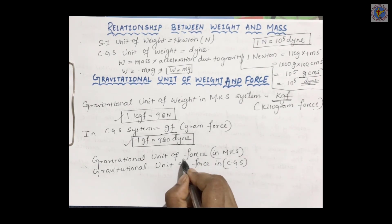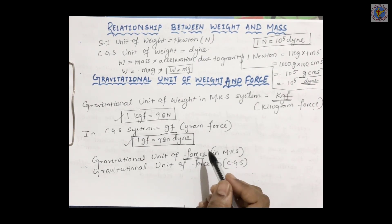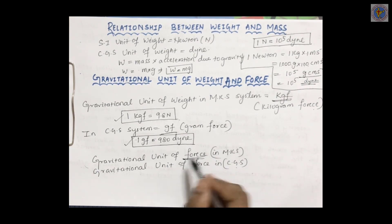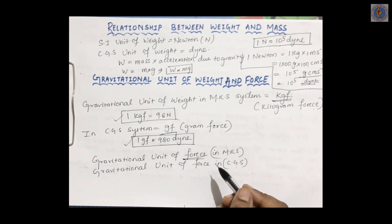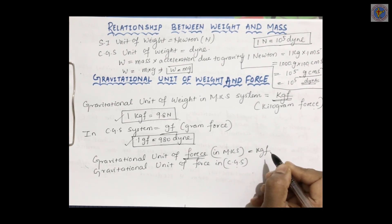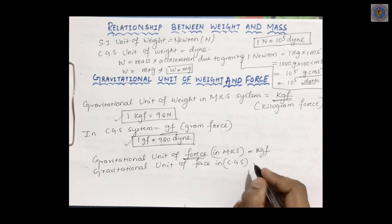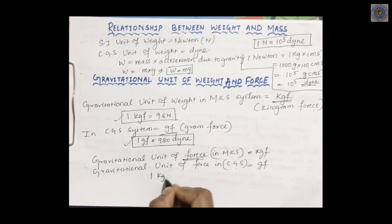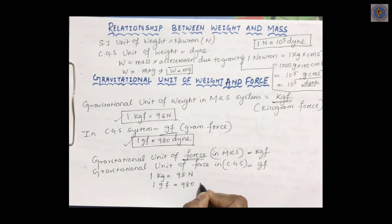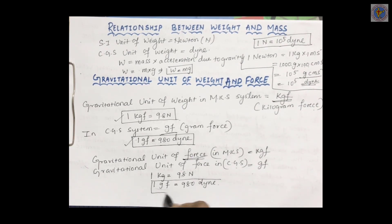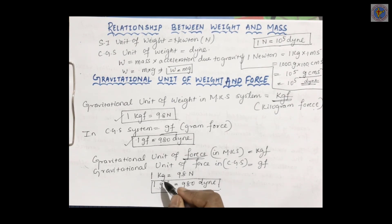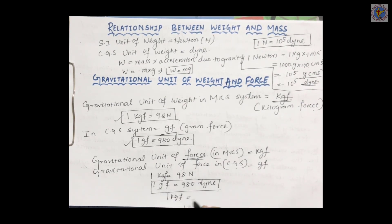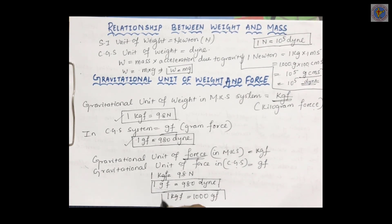Since the unit of weight and force is almost the same, the gravitational unit of force in the MKS system is also kgf (kilogram force), and in the CGS system it is GF (gram force). Here, 1 kgf is equal to 9.8 Newton, and 1 GF is equal to 980 Dyne. The similarity between kgf and GF is that 1 kgf is equal to 1000 GF.